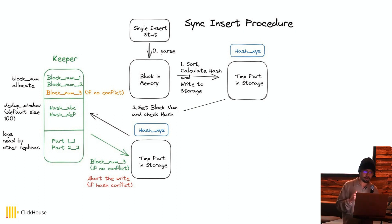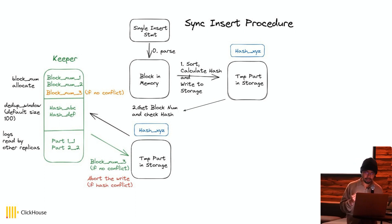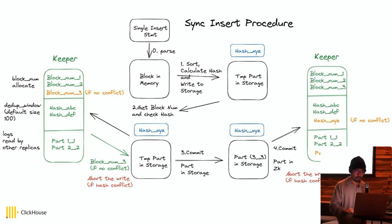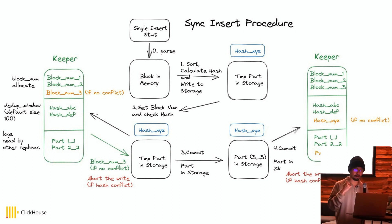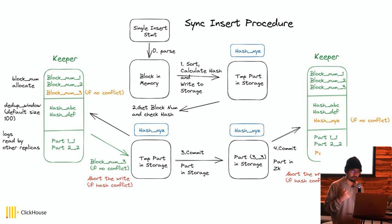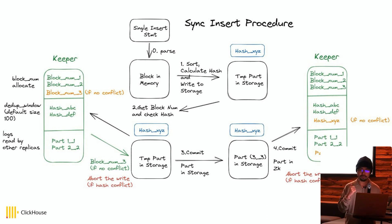In the second step, we get the block number from ZooKeeper and check the hash IDs at the same time. If the hash ID exists, we abort it. Otherwise we get a unique block number. With this block number, we commit the part locally first, and then commit this part in ZooKeeper. In this step we check the hash ID again. If there are no conflicts, we update the WAL and the deduplication window at the same time in the same transaction.